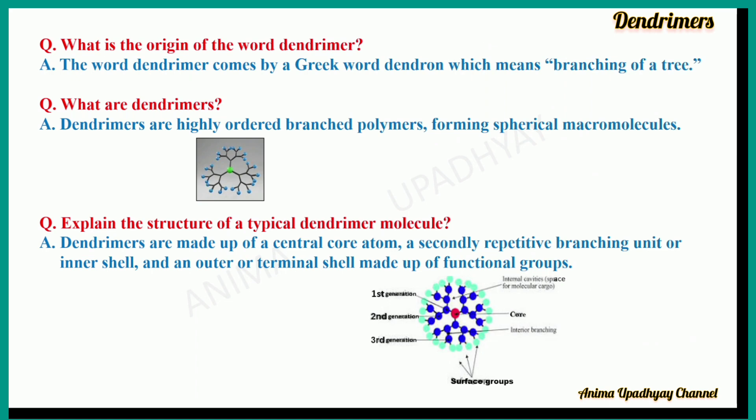What is the origin of the word dendrimer? The word dendrimer comes from a Greek word, dendron, which means branching of a tree. And looking at the appearance of a dendrimer, we can very much conclude that the word dendrimer is absolutely correct. As you can see in the figure, where the dendrimer molecule is being shown, it looks like the branches of a tree.